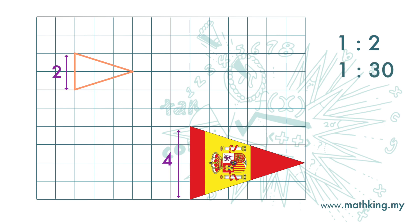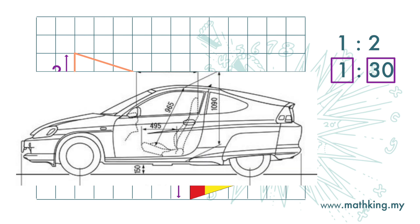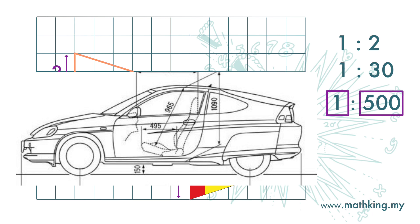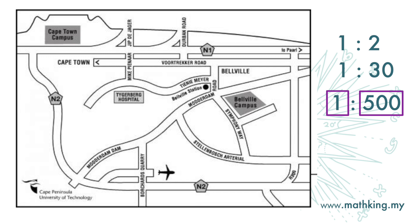The scale here is 1 to 30. The 1 here is 1 unit of the drawing, and the 30 represents 30 units of the actual object. So the object is 30 times longer than the drawing, which means the drawing is much smaller than the actual object. One example of this is a map. So when the number at the back is larger than 1 in front, the drawing is smaller than the actual object.